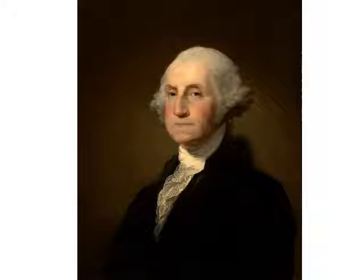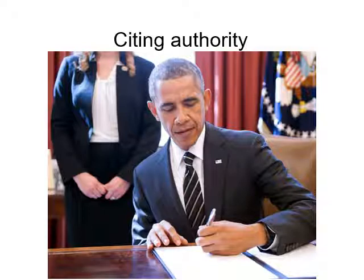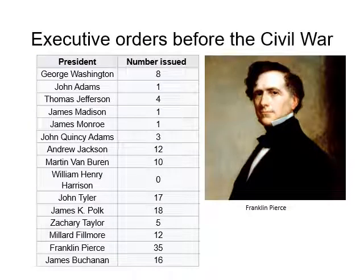Except for William Henry Harrison, all Presidents since George Washington in 1789 have issued executive orders. Presidents have generally been careful to cite the specific laws under which they act when they issue new executive orders. When Presidents believe their authority stems from powers outlined in the Constitution, the order instead simply proclaims 'under the authority vested in me by the Constitution.' Here you can see the numbers of executive orders issued for each President before the Civil War — Franklin Pierce issued the most with 35.